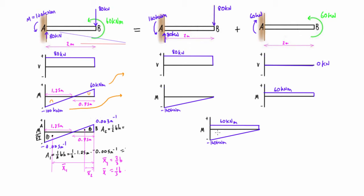The next thing we would do is draw the M over EI diagram, where we just literally divide every point on the bending moment diagram by EI. In this case, 60 divided by EI was 0.003 meters to the minus 1, and negative 160 kilonewton meters divided by EI is negative 0.008 meters to the minus 1.